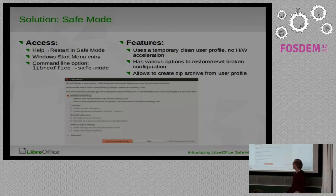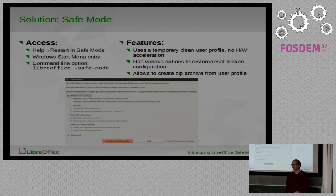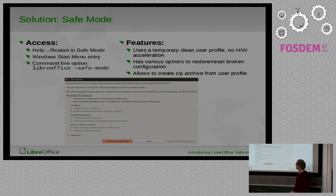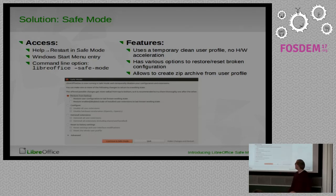How do we access the Safe Mode? There are three options. LibreOffice has a command in the help menu: restart in Safe Mode. Then you have a start menu entry in Windows — LibreOffice Safe Mode — and a command line option. That should be double-dash; auto-correction made it into a long dash. You can use that on macOS or Linux as well.